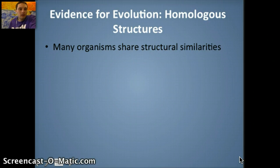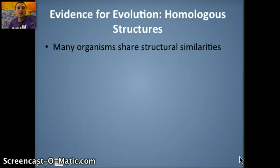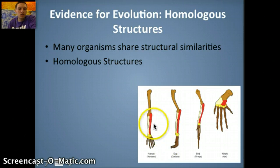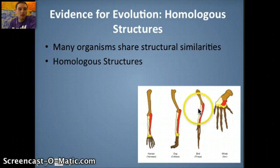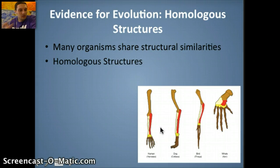The last evidence for evolution is homologous structures, which also includes vestigial structures. Homologous structures are similar in structure, position, or development because of a common ancestor. For example, humans, dogs, whales, and even birds share strong similarities in the arrangement of their arm bone structure. We can see that they all have these similar bone structures because they're due to a common ancestor.